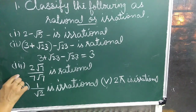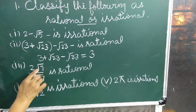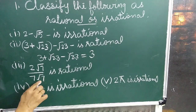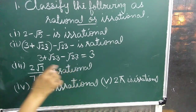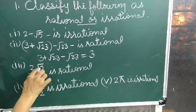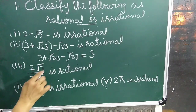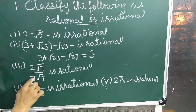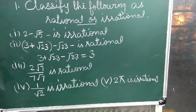Third question: 2 root 7 upon 7 root 7 is rational. When we cancel root 7 with root 7, we get the number 2 upon 7, which is a rational number.